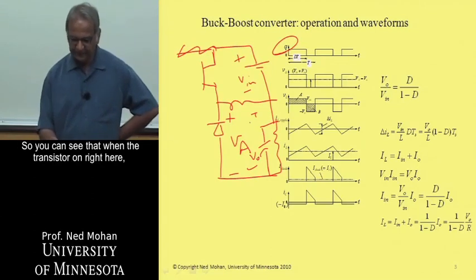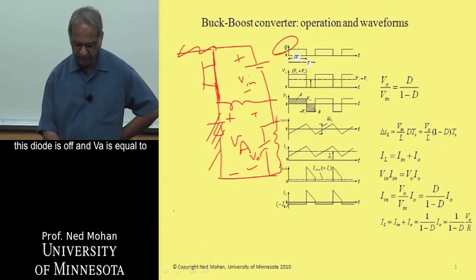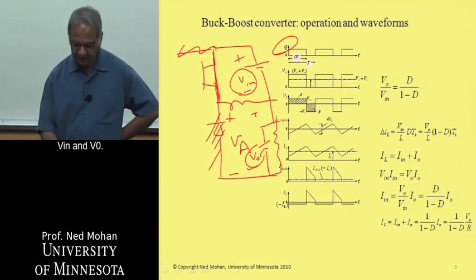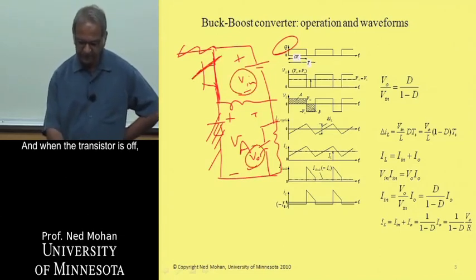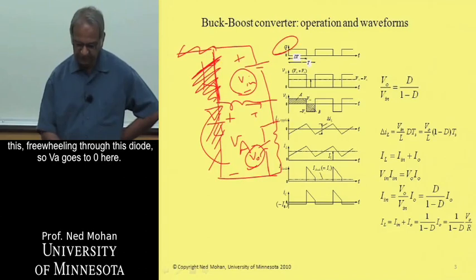So you can see that when the transistor is on right here, this diode is off, and VA is equal to the sum of these two voltages here, V in and V zero. And when the transistor is off, then this current through this inductor circulates through the freewheel diode, so VA goes to zero here.